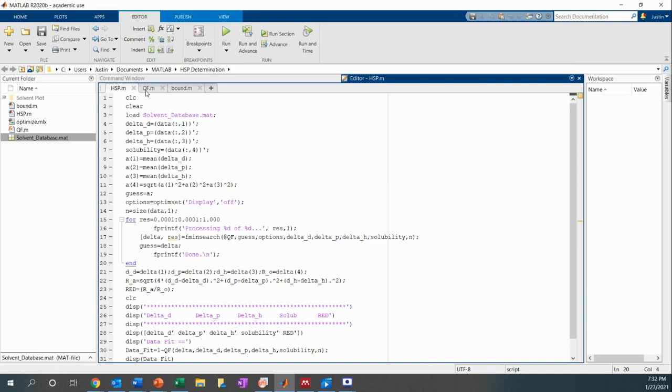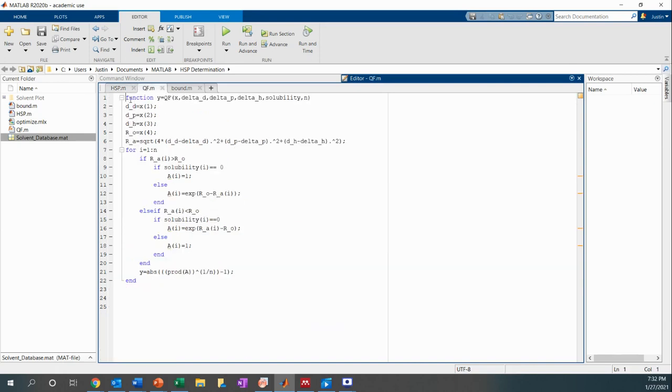While this is running, it calls upon the QF function. And so in here, we can see basically what I explained in the flowchart. It takes the current guess values for that run. And then if Ra is greater than Ro, then the solubility should be equal to zero. If it is equal to zero, then there's an output of one. If it's not equal to zero, then there is a penalty value. If Ra is less than Ro, then the solubility should be equal to one.